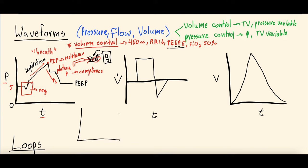Last of the three waveforms is the volume-time waveform. This one is fairly straightforward — volume increases during inspiration and decreases during expiration. In a future video we'll discuss abnormalities like air trapping, where volume goes up during inspiration but doesn't return to zero in expiration, or breath stacking, where volume goes up, comes down, and then the patient takes another breath very quickly.